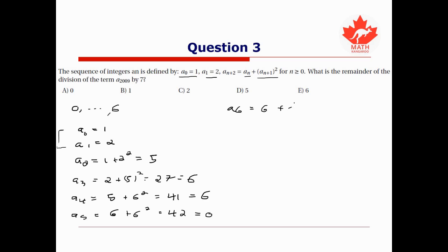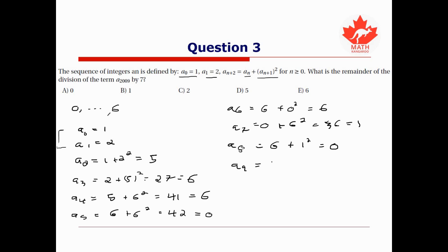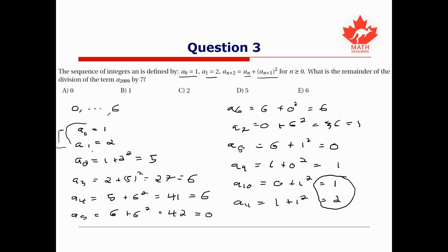Continuing: a₆ = 6 + 0² = 6 (mod 7). a₇ = 0 + 6² = 36 ≡ 1 (mod 7). a₈ = 6 + 1² = 7 ≡ 0 (mod 7). a₉ = 1 + 0² = 1 (mod 7). a₁₀ = 0 + 1² = 1 (mod 7). a₁₁ = 1 + 1² = 2 (mod 7). We've found our repetition: 1 followed by 2 appears again at indices 10 and 11.